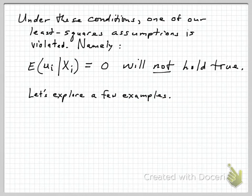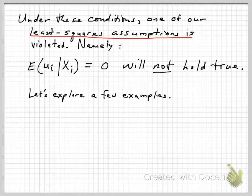Under these conditions, one of our key least squares assumptions is violated — namely, the independence of the error term from the X's will not hold true. To put it more concretely in terms of our assumptions, the expected value of the error term for each individual, conditional on the X's in the regression, will not be equal to zero. And that's the source of the bias, as it is in many cases. Let's look at a couple of examples.